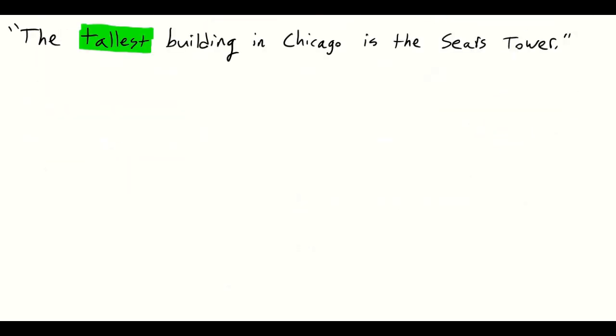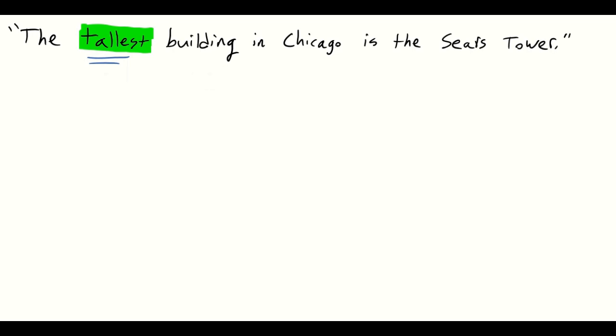Let's try the next example: the tallest building in Chicago is the Sears Tower. Once again it is a superlative proposition — a claim to be the tallest building in Chicago — and this time the proposition is true. The first thing we should do is state our simple one-place predicate facts. We can say the Sears Tower is in Chicago: capital C for Chicago, lowercase s for Sears Tower. Also, the Sears Tower is a building: capital B for building, s for subject. And now we will have our universal affirmative proposition.